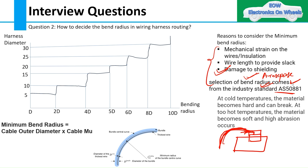Apart from the three reasons discussed, there are other factors: first is temperature, and second is the flexibility of the particular wire or bundle. In cold temperature, material becomes hard and can break. In hot temperature, material becomes soft and high abrasion can occur. Flexibility also matters — if your bundle is more flexible, it is easy to bend and won't be affected as much compared to a hard, inflexible bundle.